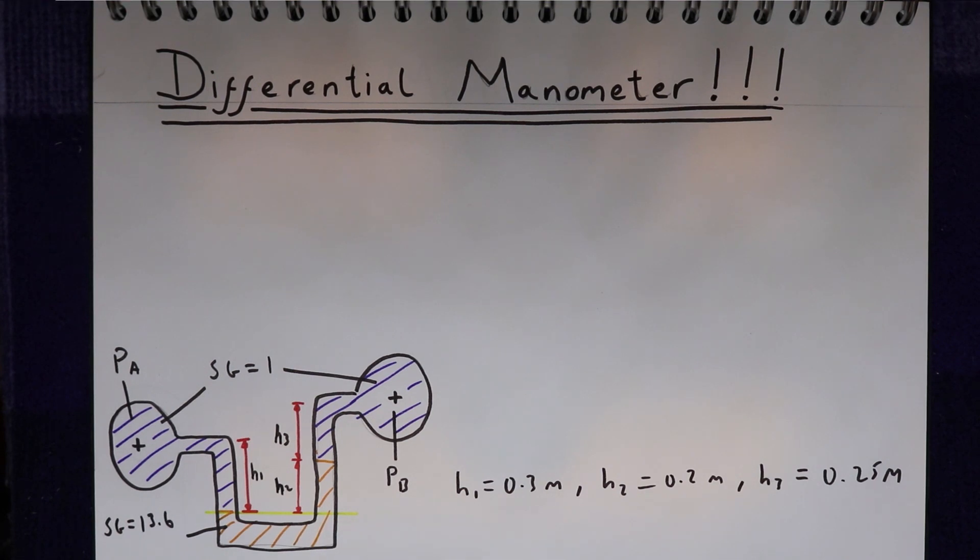The two things that we know about this U-tube is that we can neglect everything below this line. Because as we go down here, we're going to get an increase in pressure. But on the other side, we'll go back up by the same amount. So we'll get a decrease in pressure equal to the increase in pressure on this side. So the total pressure difference between these two points is zero. So we can ignore everything below the line.